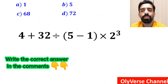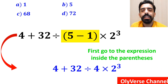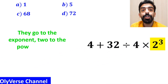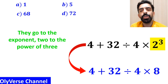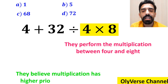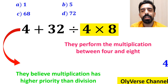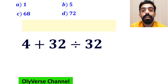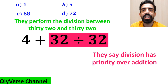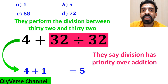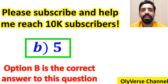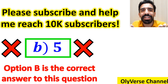Also, some other people when solving this question first go to the expression inside the parenthesis and write 4 plus 32 divided by 4 times 2 to the power of 3. Next they simplify 2 to the power of 3 to get 4 plus 32 divided by 4 times 8. Then they perform the multiplication between 4 and 8 because they believe multiplication has higher priority than division, writing 4 plus 32 divided by 32. Finally they perform the division to get 4 plus 1, giving the answer 5, and conclude that option B is the correct answer. But we were tricked — it's not the correct answer either.